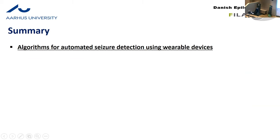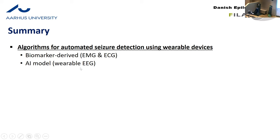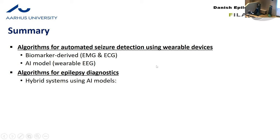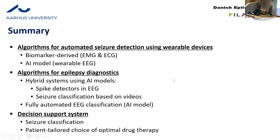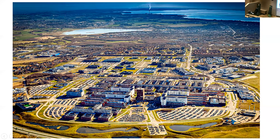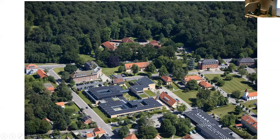To sum this up: algorithms can accurately detect seizures when implemented in wearable devices — I showed biomarker derived algorithms in surface electromyography and electrocardiography devices, and AI models implemented into wearable EEG devices. I showed algorithms for epilepsy diagnostics, both hybrid semi-automatic systems for detecting spikes in EEG and for seizure classification based on video recordings, and fully automated EEG classification using an AI model. I also showed that a decision support system provides reliable choices for seizure classification and patient-tailored optimal anti-seizure medication. Thank you for your attention.